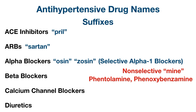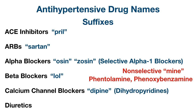The alpha blocker video will go into more detail on both selective and non-selective types, so just be aware that -osin applies to selective alpha-1 blockers. Moving on, beta blockers have the suffix -lol, and many of the calcium channel blockers end in -dipine, especially dihydropyridines.